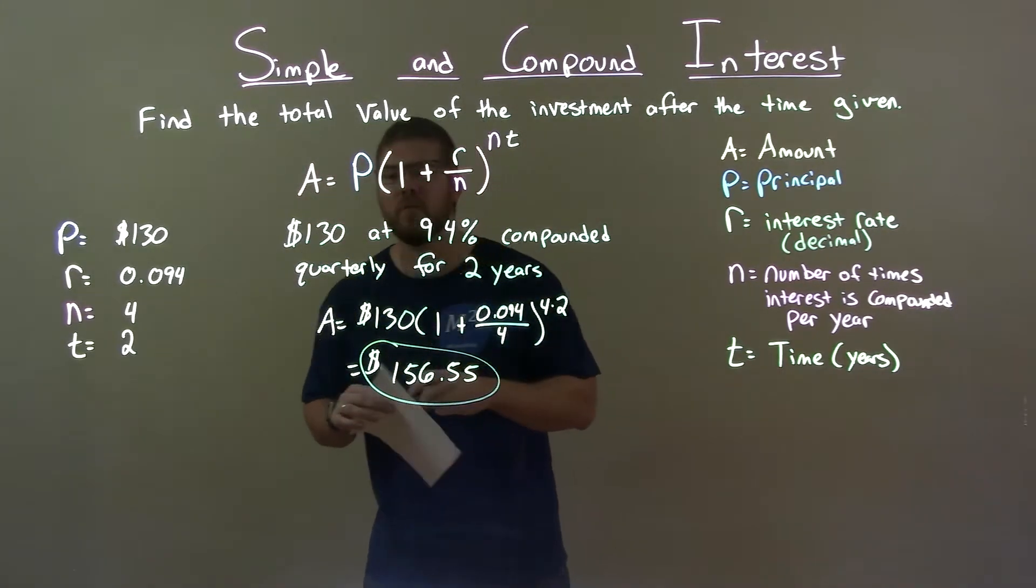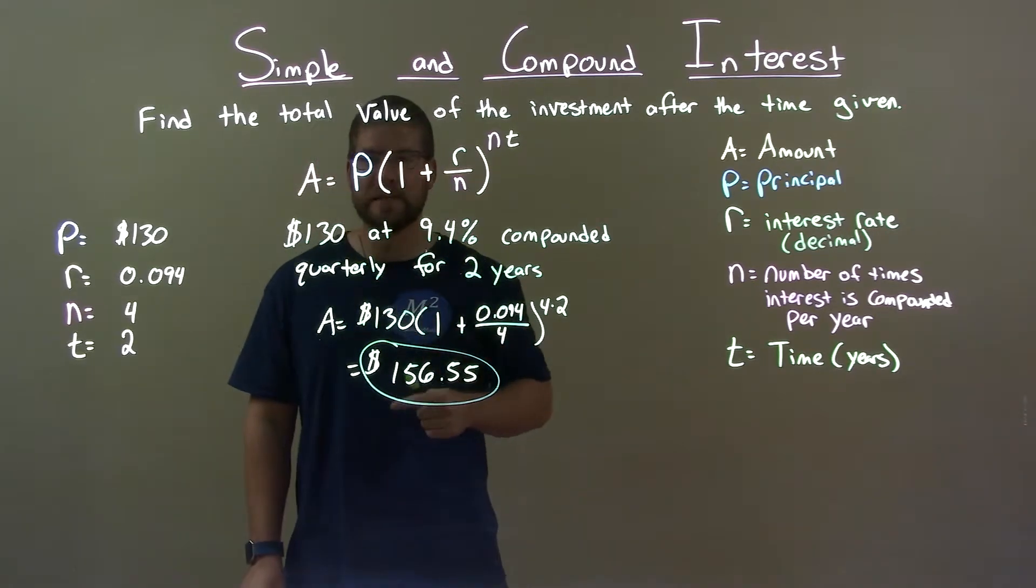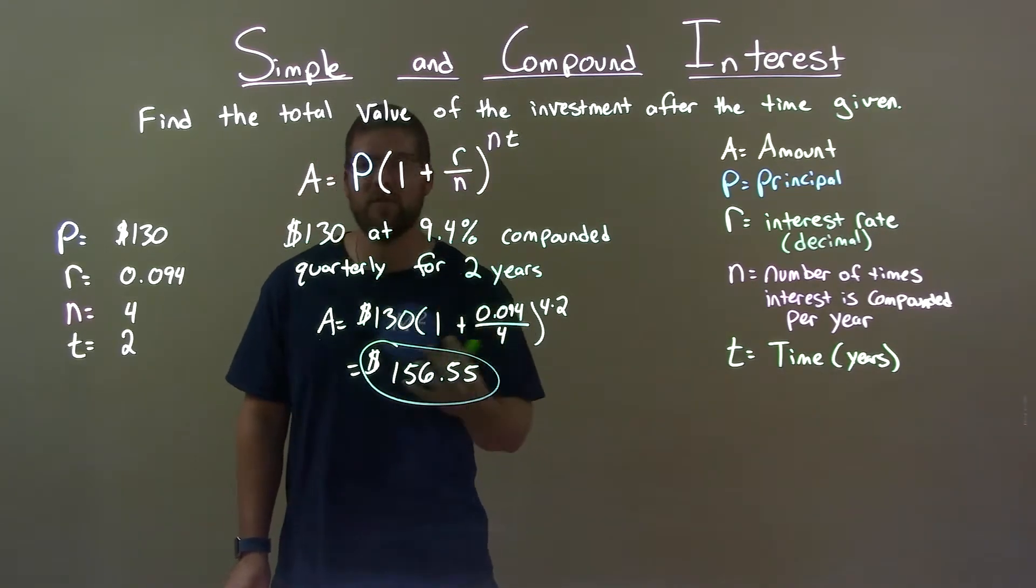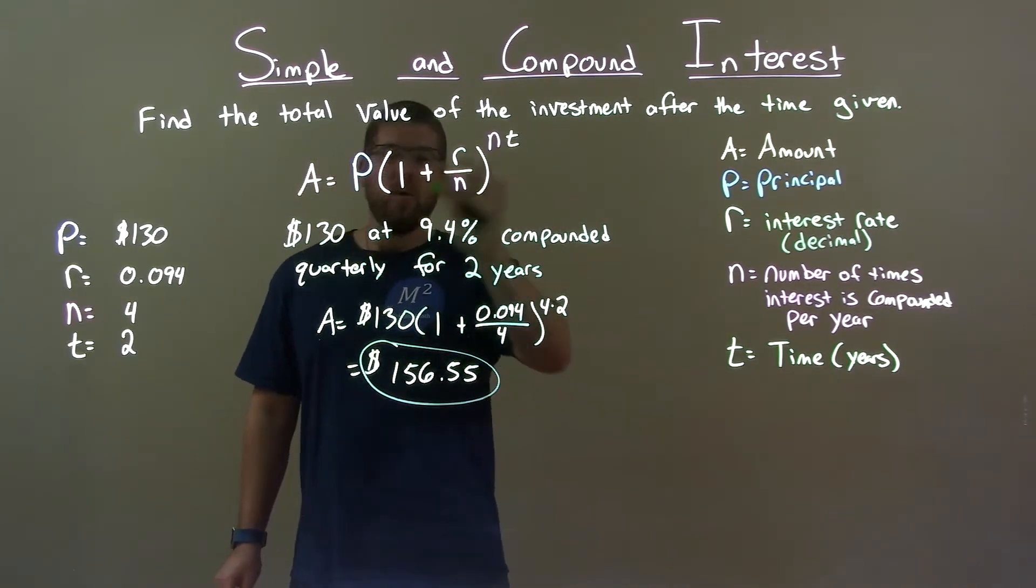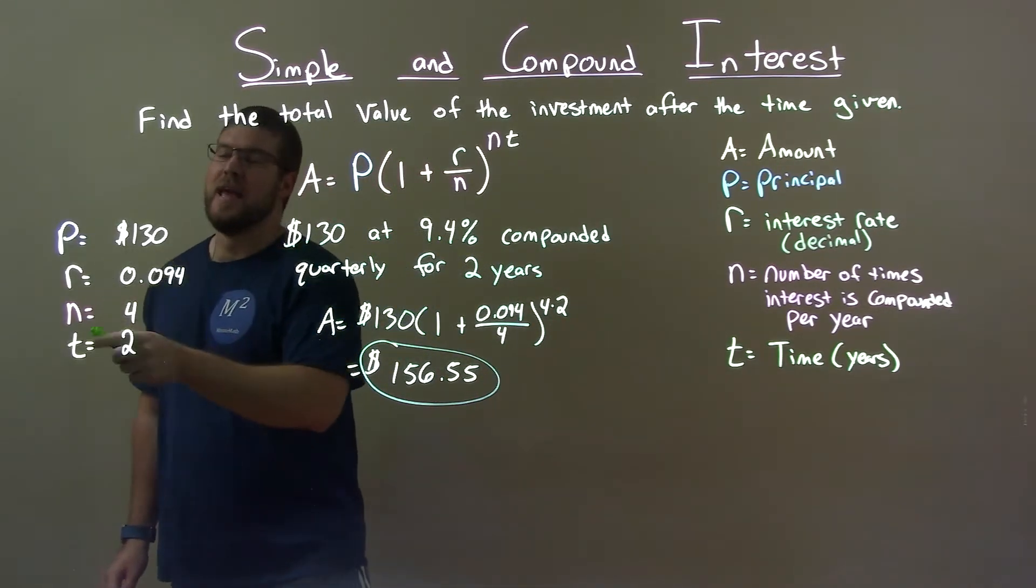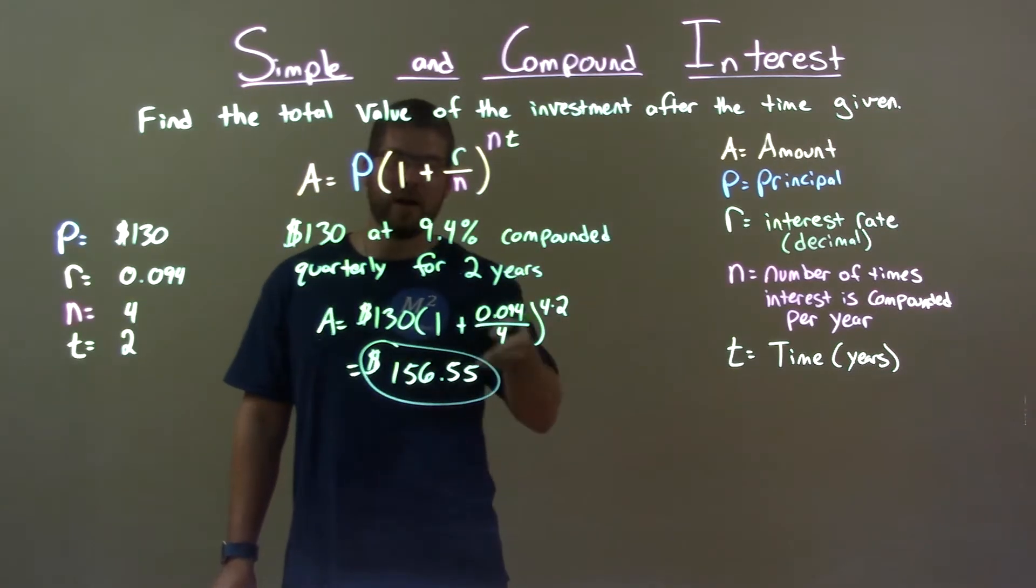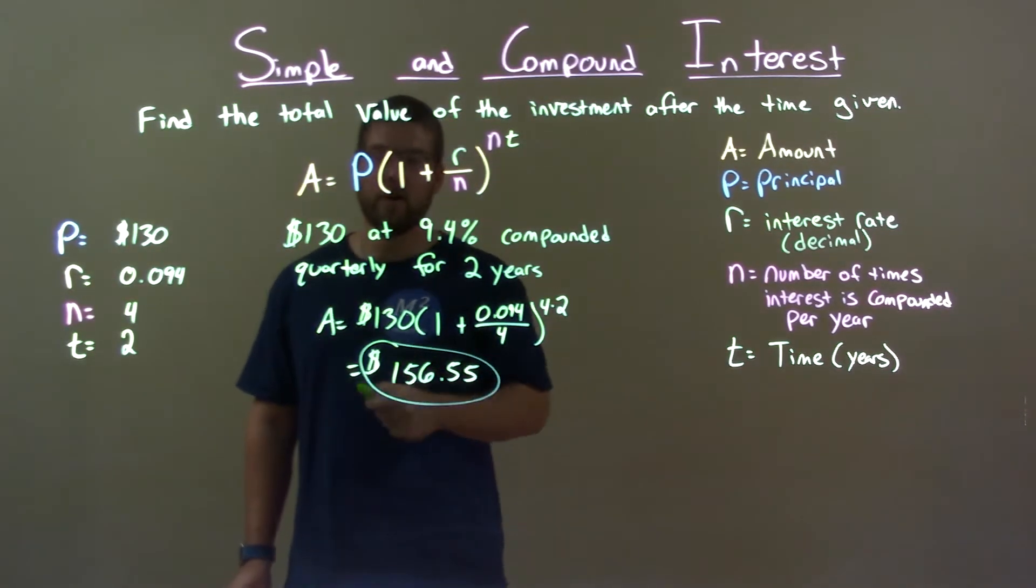Quick recap. We're given $130 at 9.4% compounded quarterly for 2 years, and we define the total value of that investment. With that information from the word problem, we found the values for P, R, n, and T. We apply that to our compound interest formula to get our final investment value of $156.55.